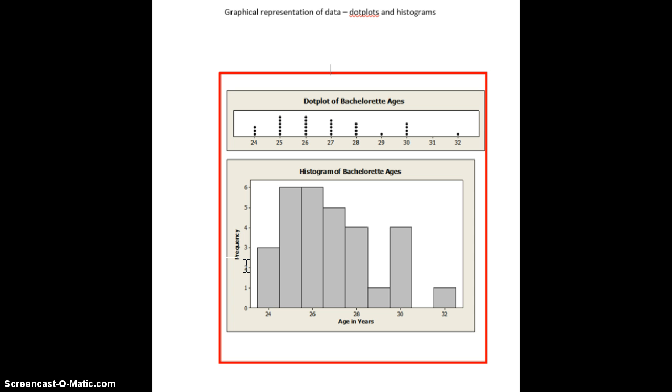That's one way of doing it. But a more common way is we take the age ranges and we break them up into bins, and we create something called the histogram. If you look at the bottom, the same data is now represented with the histogram. For example, the first histogram goes from 23 and a half years old to 24 and a half years old, which really means the age of 24.